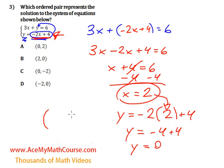So the x-coordinate is 2 and the y-coordinate is 0, x comma y of course. So the answer is B. That's it.